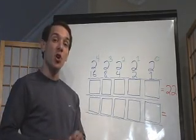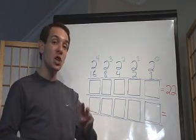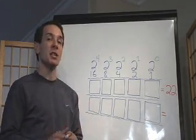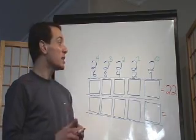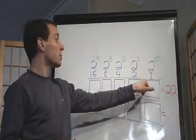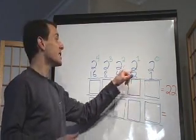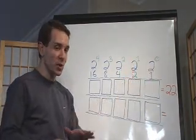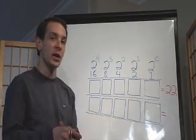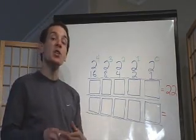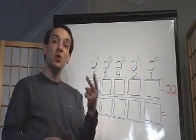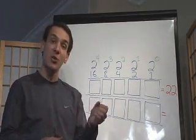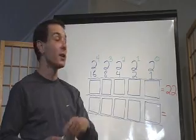Binary numbers is what's called a base 2 system. There are two things to that: one is that each of the places is a power of 2, and we'll talk about that shortly. The other one is you'll only have two choices — everything's going to either be a 0 or a 1.